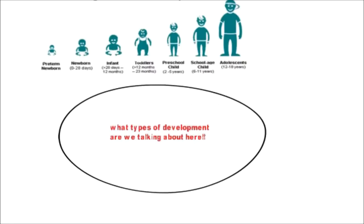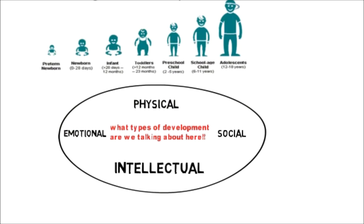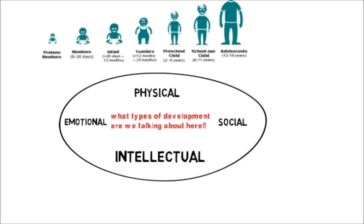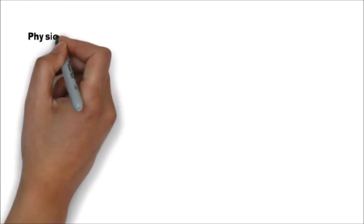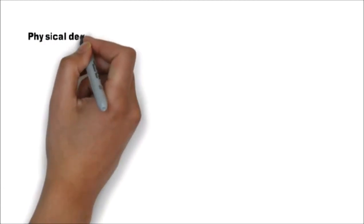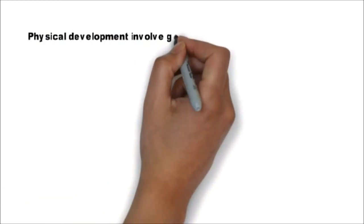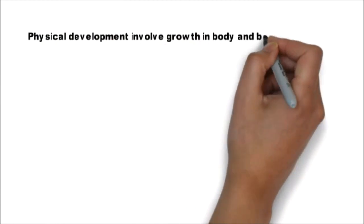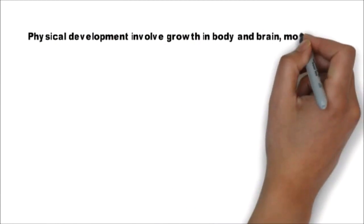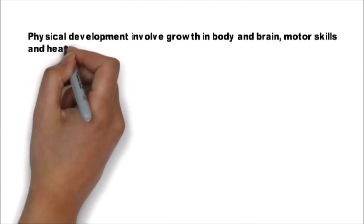When we are talking about human development, we are talking about physical, social, emotional, and intellectual development. The first domain is physical development, which involves growth in body and brain, motor skills, and health.